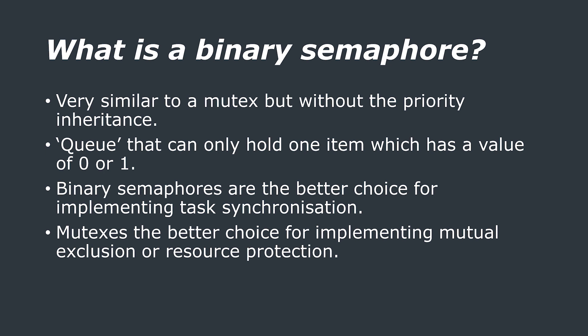The priority inheritance mechanism essentially makes sure that high priority tasks aren't blocked forever whilst waiting for a mutex. This difference in functionality makes semaphores the better choice for implementing task synchronization between tasks or between tasks and an interrupt, whilst mutexes are the better choice for implementing mutual exclusion or resource protection.